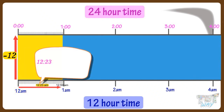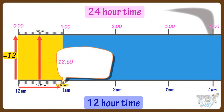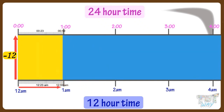If it's 12:23 a.m., in order to convert into the 24-hour clock system, we subtract 12, and we get 23 minutes past 12 midnight. If the time is 12:59 a.m., you subtract 12 and get 59 minutes past 12 midnight. So from 12 a.m. to 12:59 a.m., we subtract 12 to convert to the 24-hour clock system.